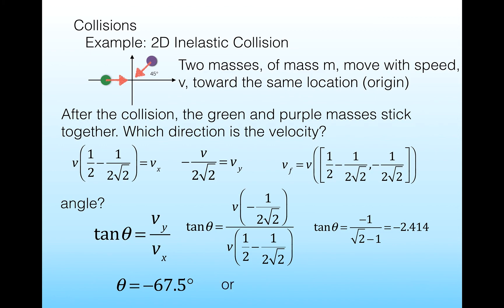We have to remember that tangent can have more than one answer for the same value, so it could also be 112.5 degrees. You can verify: plugging in 112.5 degrees and hitting tangent also gives minus 2.414. To decide which is correct, we consider which quadrant each angle is in. 112.5 degrees is in the upper left quadrant, while minus 67.5 degrees is in the lower right quadrant — which is where we expect the answer to be. So minus 67.5 degrees is the correct direction of the final velocity.